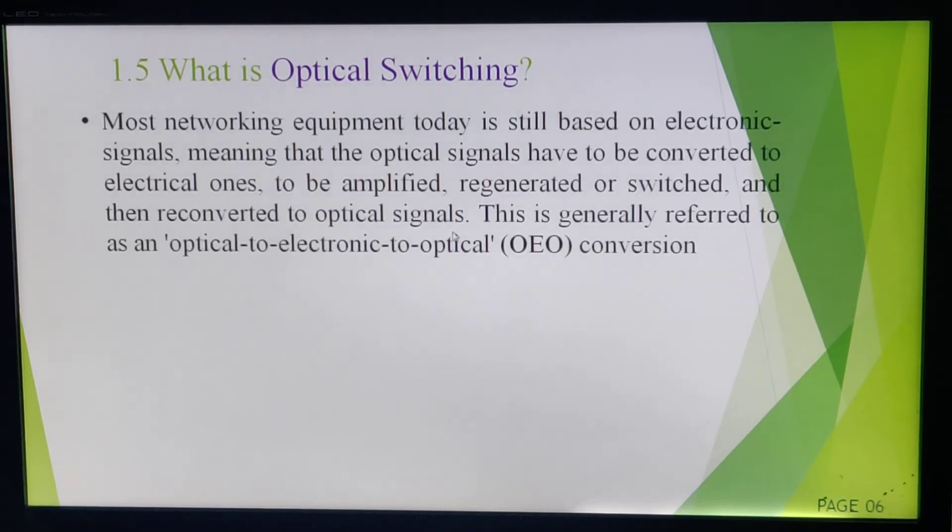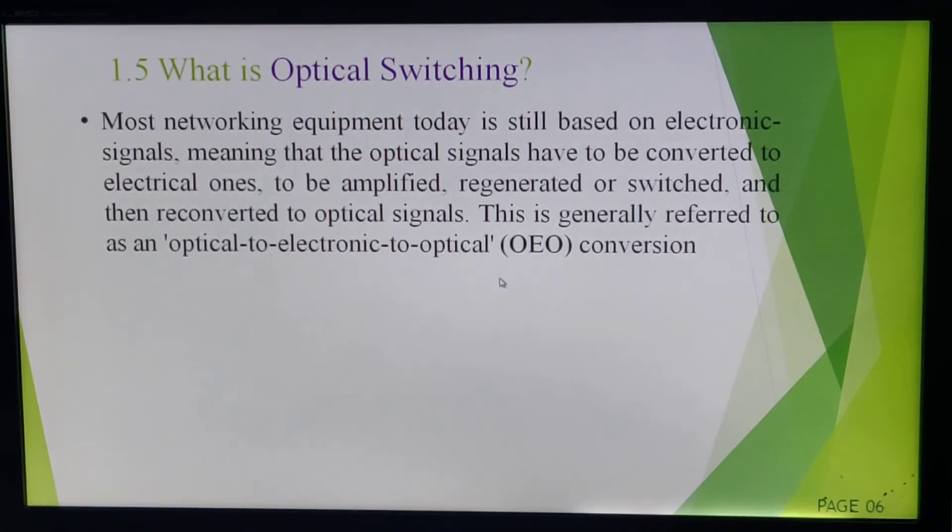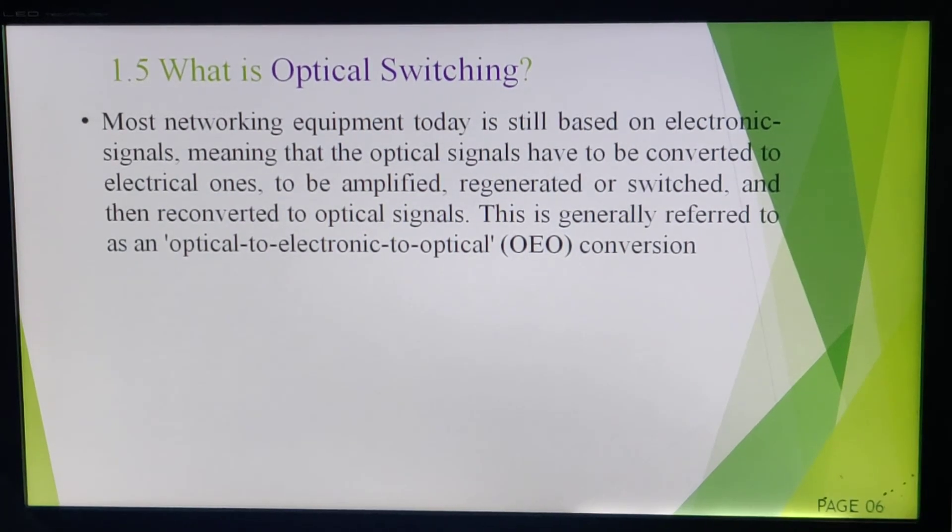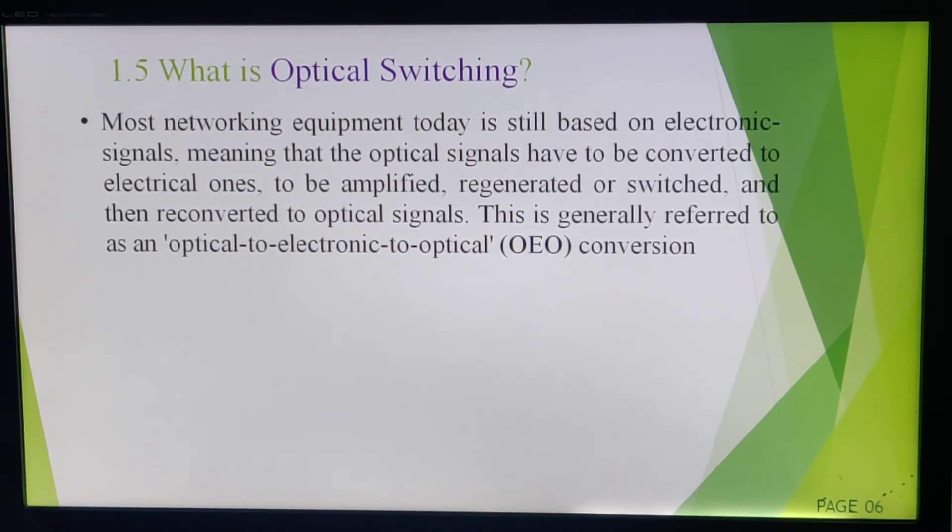So optical switching, as we have discussed, switches the optical signals which are classified in terms of wavelength. Here we generally will refer this optical switching as optical-to-electronic-to-optical conversion, means OEO. What is the significance behind this? The input signal is in the form of light, is in the form of photons, is in the form of light—optic.